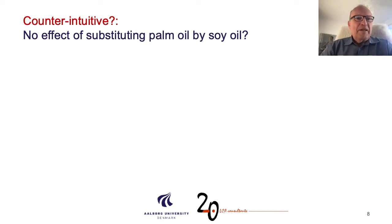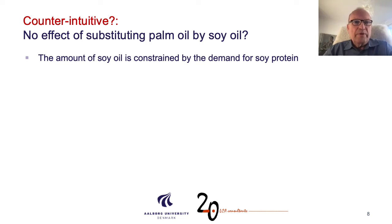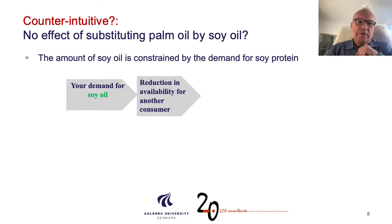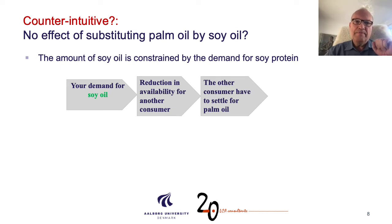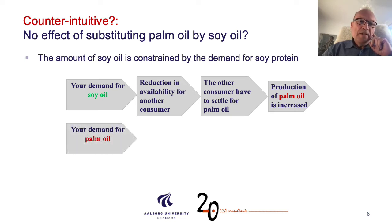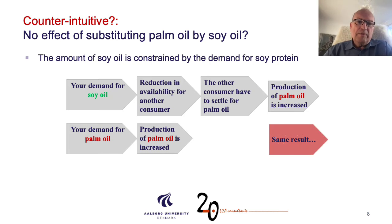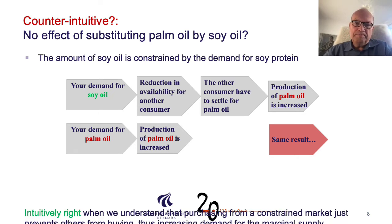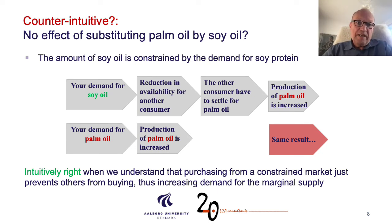In the same ballpark, we have the counterintuitive output that there is no effect of substituting palm oil by soy oil. The amount of soy oil is constrained by the demand for soy protein. Whenever you ask for soy protein, you get 200 grams of soy oil. So when you ask for soy oil specifically, it just means that some other consumer will not be able to get this soy oil — you don't produce more soy oil just because there is a demand for it. The consumer has to settle for palm oil, which is the marginal oil on the market, so palm oil is increased. If you instead demand palm oil, obviously more production of palm oil happens and you get exactly the same result. This becomes intuitively right when we understand that purchasing from a constrained market prevents others from buying, thus increasing the demand for the marginal supplier.